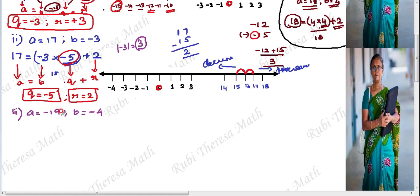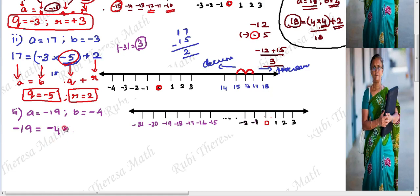Third subdivision: A equals minus 19, B equals minus 4. Applying the statement: minus 19 equals minus 4 into Q plus R. For negative integers the lesser value is on the left side. Minus 20, minus 21, minus 22 are lesser values than minus 19.